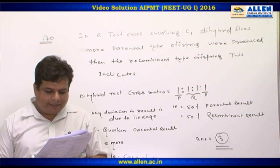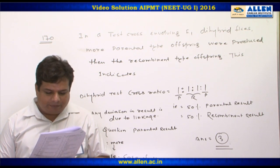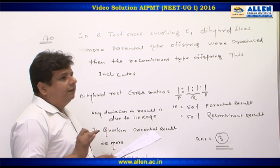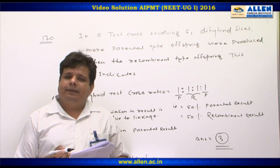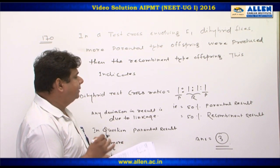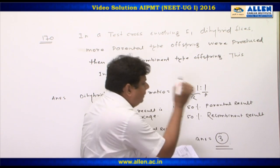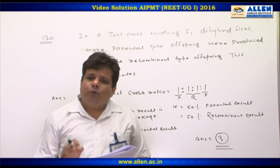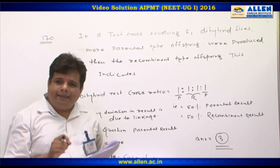We are going to discuss question number 170. In a test cross involving F1 dihybrid flies, more parental type offspring were produced than recombinant type offspring. There is a tool to identify whether any result is due to independent assortment or linkage. In a dihybrid test cross, if we get a ratio of 1:1:1:1, that means 50% parental and 50% recombinant — this is due to independent assortment.